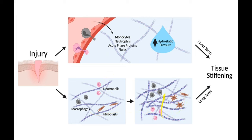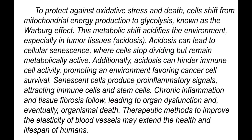This is how stiffening of the extracellular matrix looks — collagen fibers appear while elastin fibers are destroyed. This process also happens in wound healing; it is common for the body to react to inflammation and tissue damage. To protect against oxidative stress and cell death, cells shift from mitochondrial energy production to glycolysis, known as the Warburg effect.